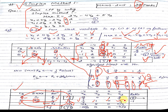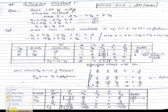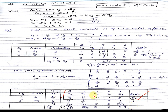Subtracting zj from cj gives the new cj-bar row: 1/3, -2/3, 0, 0, and other values. The most positive value is 1/3, so that becomes the new key column. Ratios: (8/3)÷(1/3) = 8, and (1/3)÷(-1/3) = -1. The least positive ratio is 8, so 1/3 is the new key element.